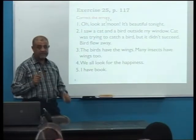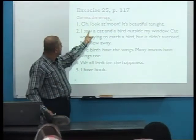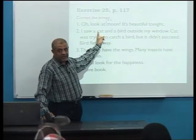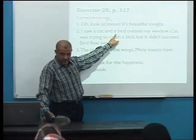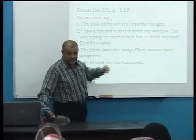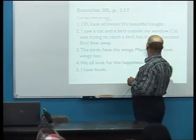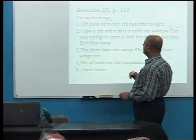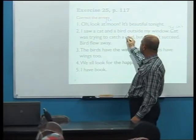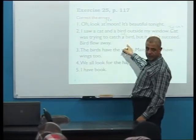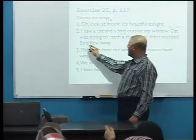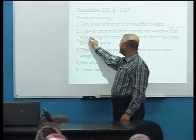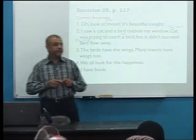In this sentence: 'I saw a cat' — cat is first mentioned, so we use 'a.' 'A bird' — also first mentioned. Then 'the cat was trying to catch the bird' — both are second mentioned, so we use 'the.' The bird is second mentioned but it didn't succeed.